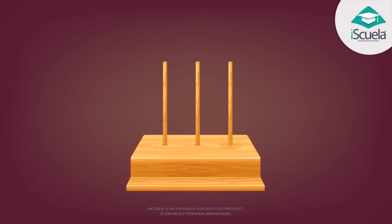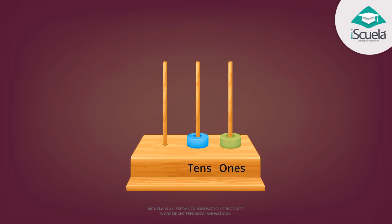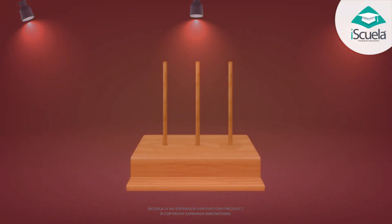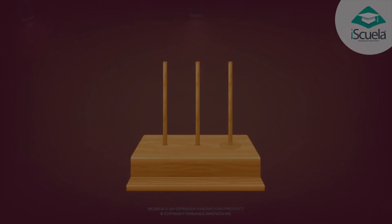First digit is 1 — ones. Second digit is 10 — tens. Third digit is 100 — hundreds. Learn it by heart and I will become smart! I'll see you next time.